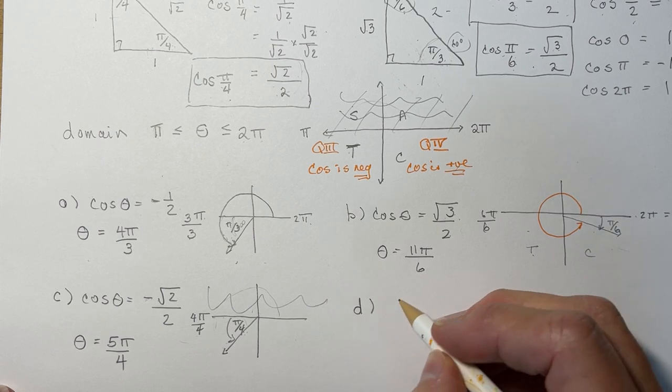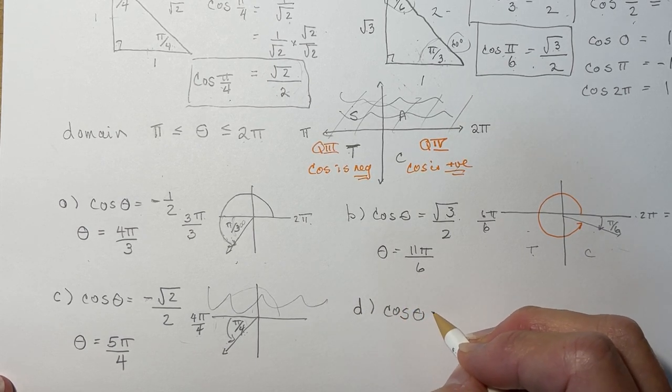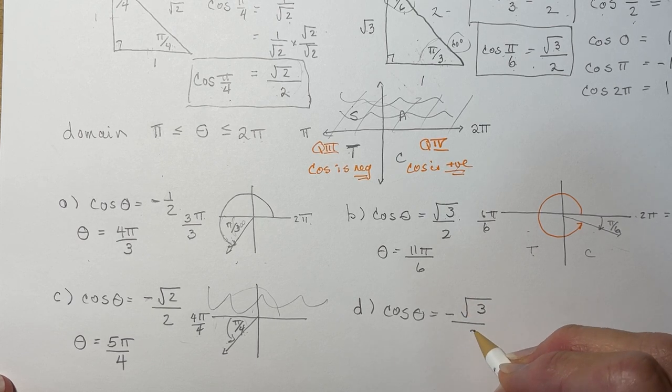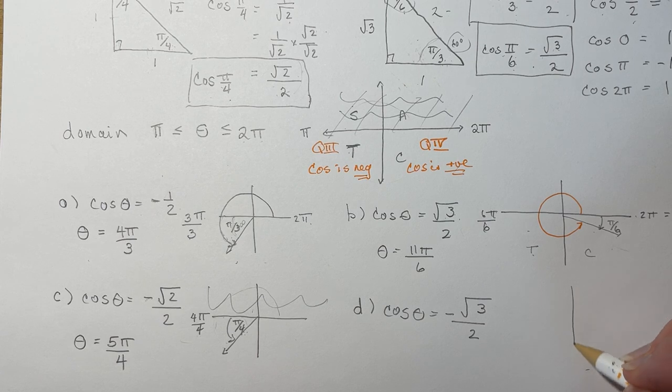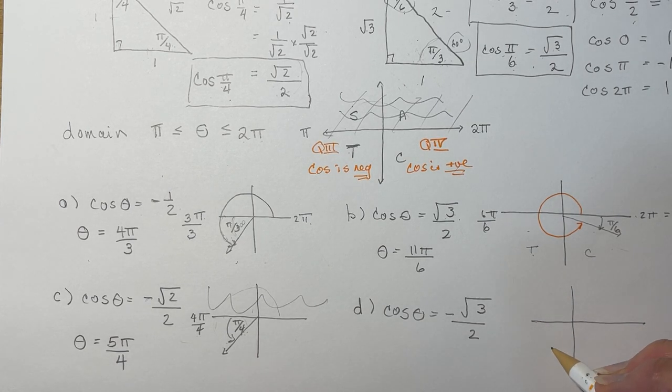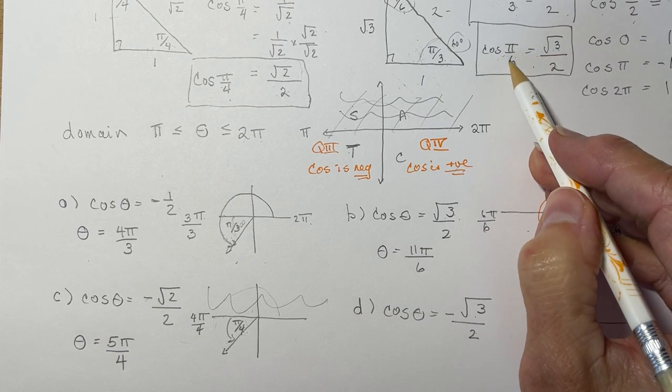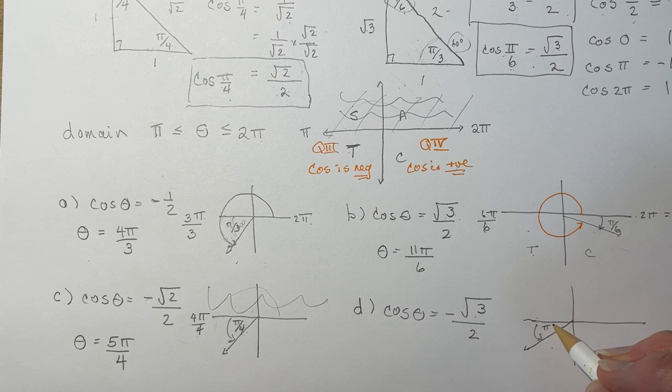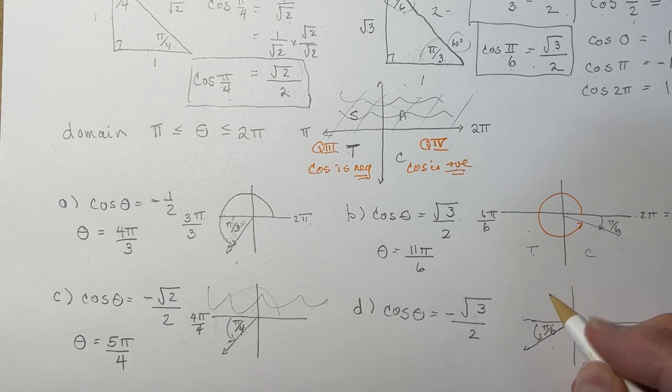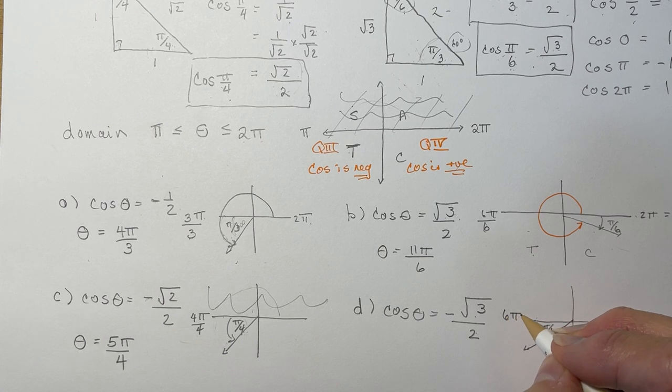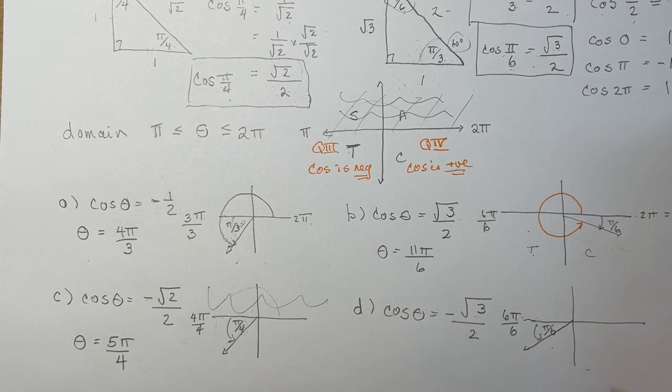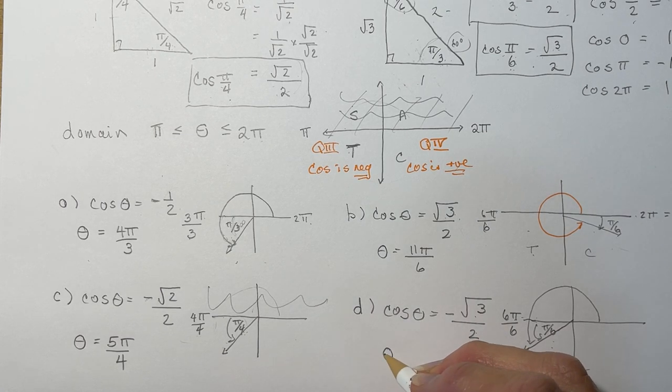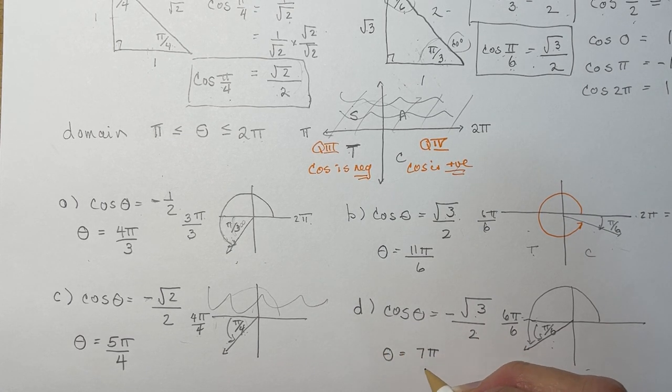Let's do D. Root 3 over 2, negative, so the cos is negative, I'm in this quadrant. Root 3 over 2 is the cos of pi over 6. So I'm pi over 6 away from the x-axis, so this is just pi over 6. And again, I'm going to change this distance from here to here instead of being pi, I'm going to call it 6 pi over 6, which is 1 pi. I'm going to go from here to here, so 6 pi over 6 plus pi over 6, so theta is going to be 7 pi over 6.